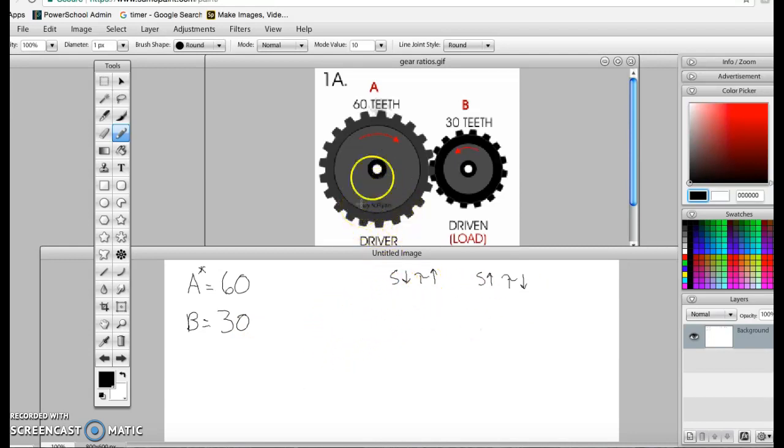If the drive motor is the big gear and the smaller gear is the driven gear, so if it's from big to small, this is going to be a speed increase with a torque decrease. Alright, so let's go ahead and do our calculations.